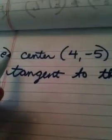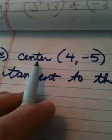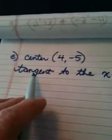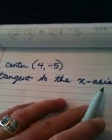Okay, here is question E, alright? Find the equation of a circle given that the center is (4, -5) and the circle is tangent to the x-axis.